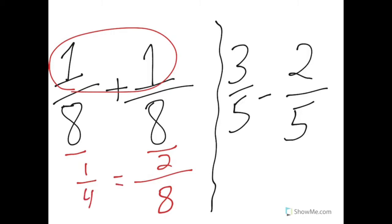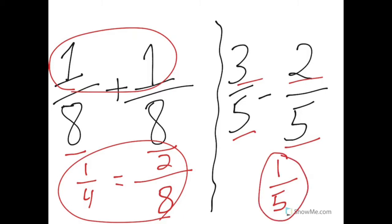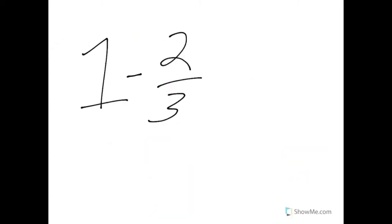If I was going to put that in simplest form, that would of course be 1/4. Those are equivalent. Subtraction, same thing: 3/5 minus 2/5. Denominator for both is fifths, so the denominator stays the same. They're like fractions, the denominator is the same, so it stays fifths. 3 minus 2 gives me 1.